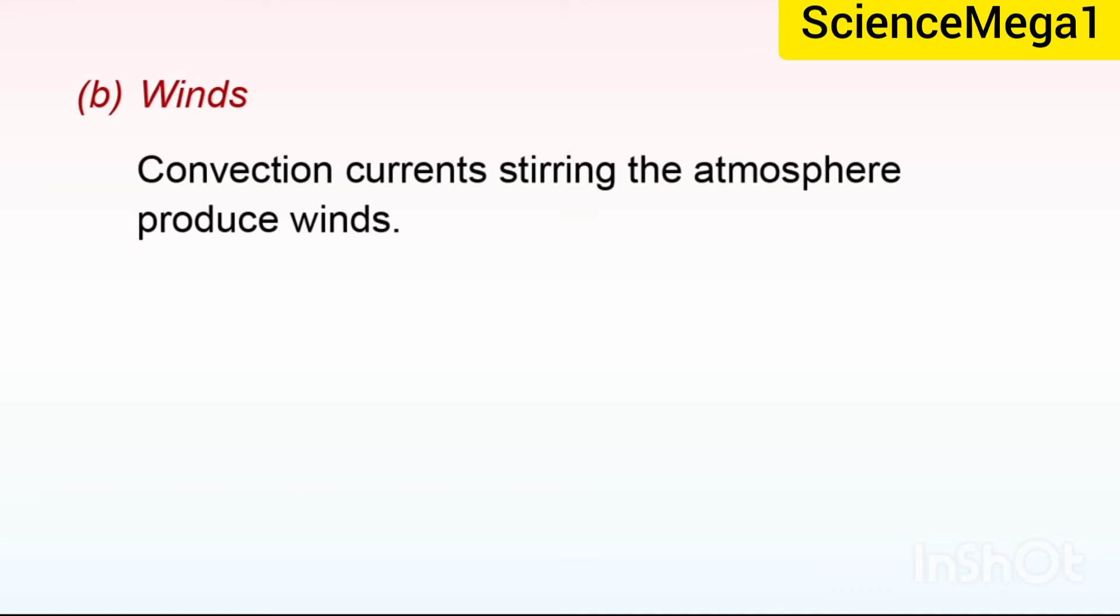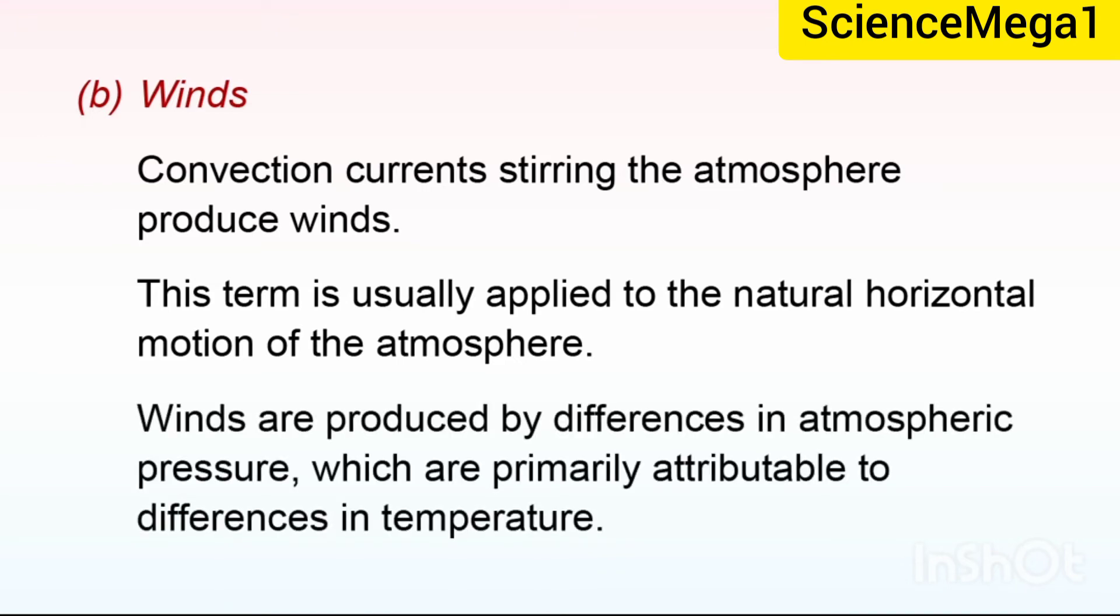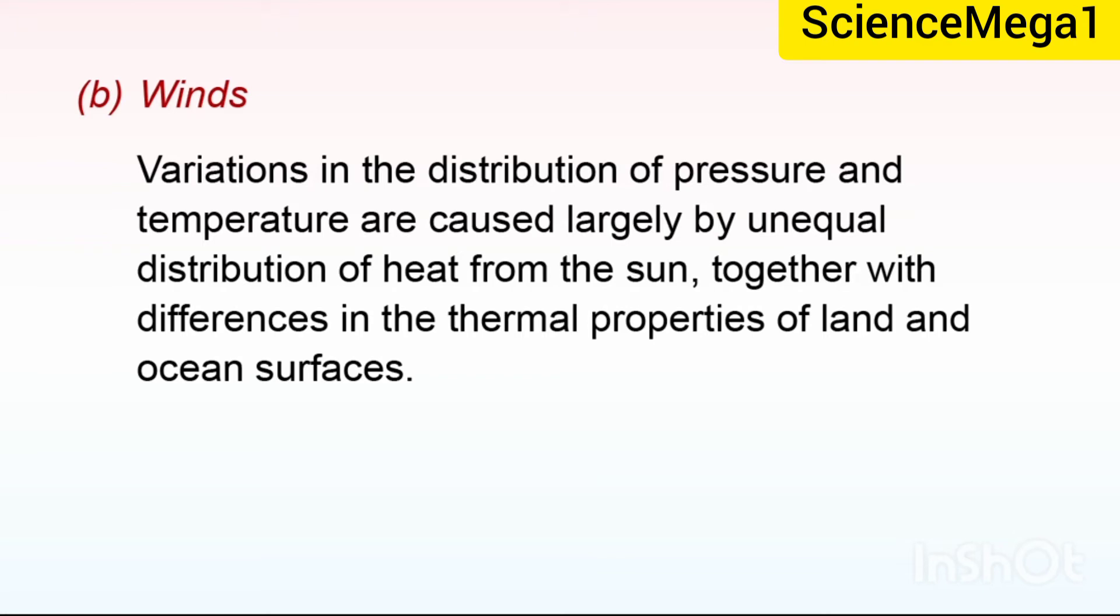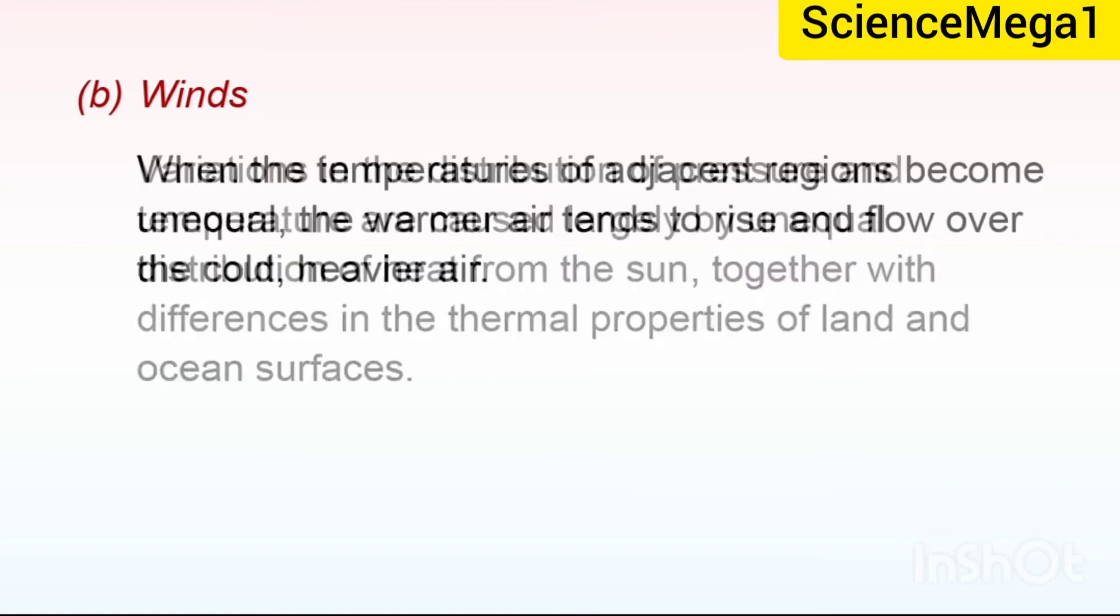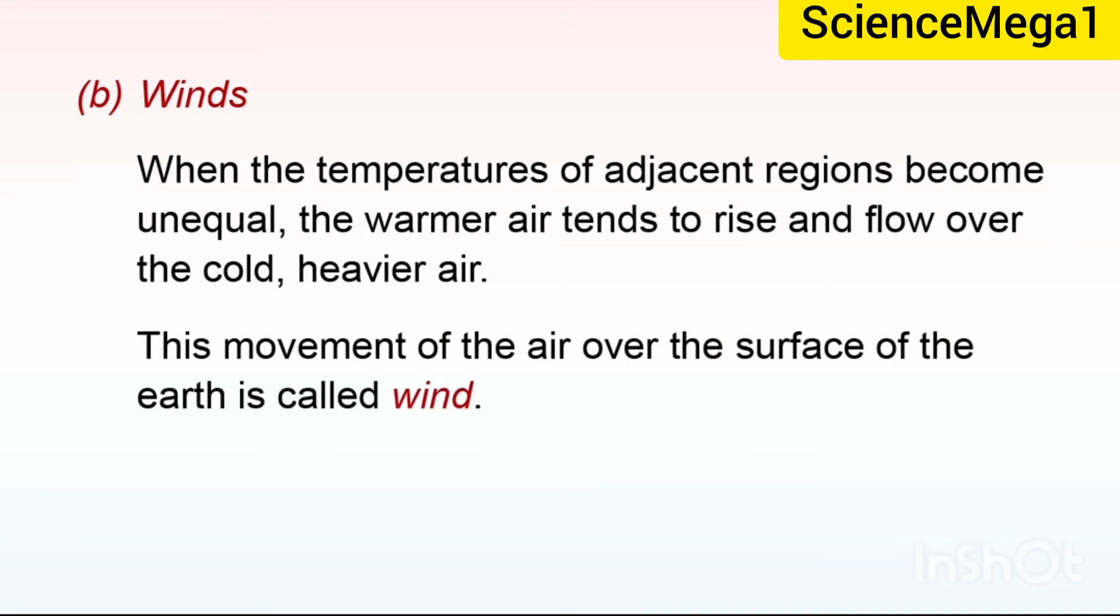We now look at winds. Convection currents stirring the atmosphere produce winds. This term is usually applied to the natural horizontal motion of the atmosphere. Winds are produced by differences in atmospheric pressure which are primarily attributable to differences in temperature. Variation in the distribution of pressure and temperature are caused largely by unequal distribution of heat from the sun together with the differences in the thermal properties of land and ocean surfaces. When the temperature of adjacent regions become unequal, the warmer air tends to rise and flow over the cold, heavier air. This movement of air over the surface of the earth is called wind.